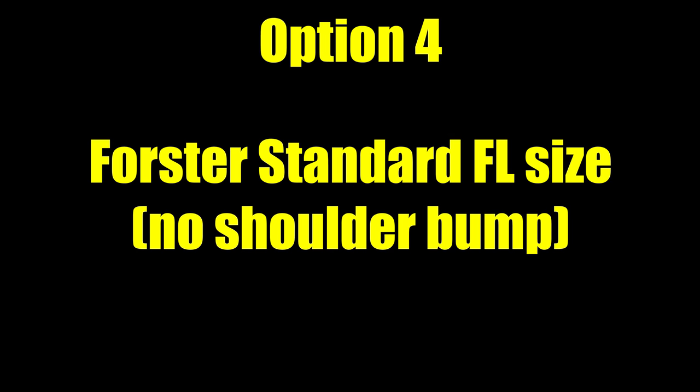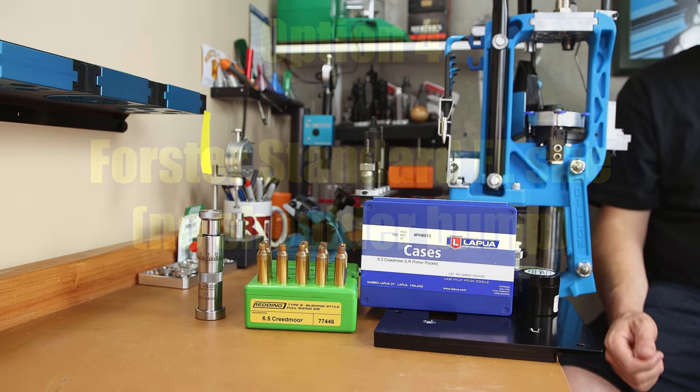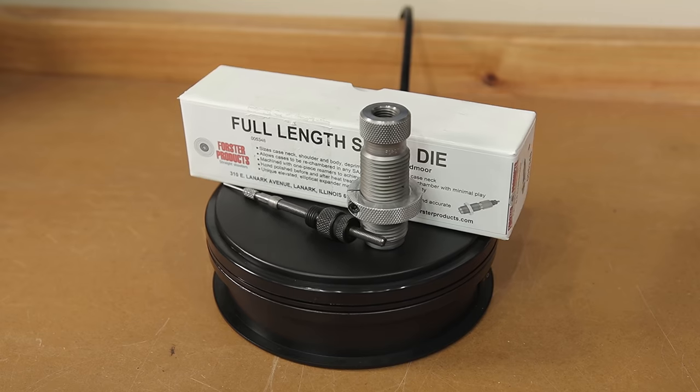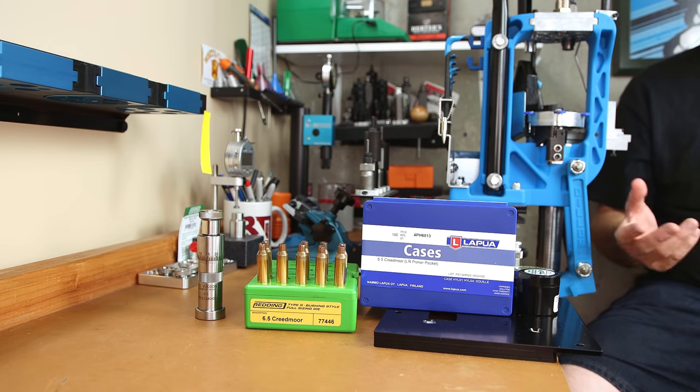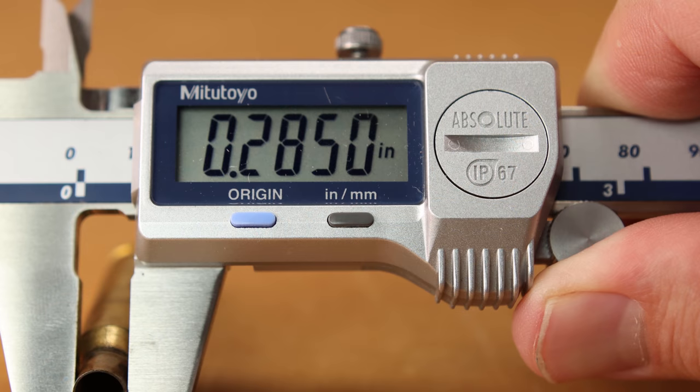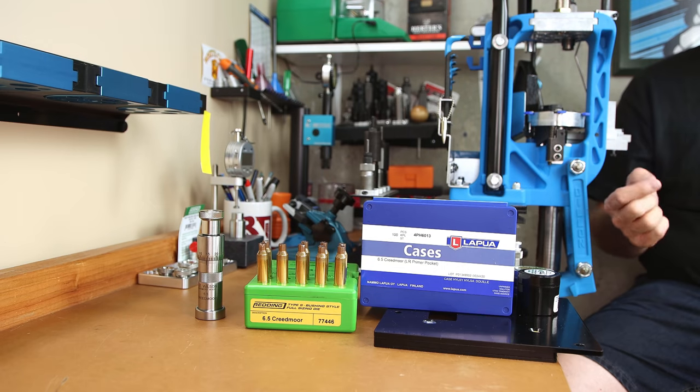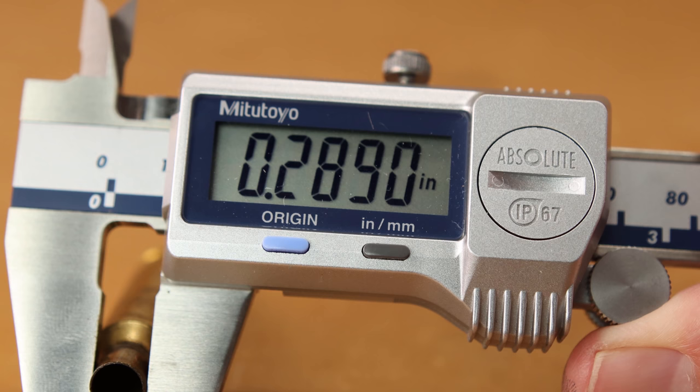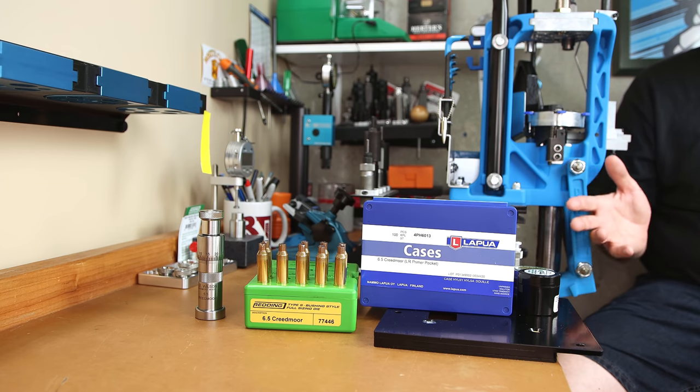Option 4: a full length sizer die. For this option, we'll be simply using my Forester full length sizing die as it is shipped from the factory, standard expander ball that comes with it, and everything. I've done some measurements on the brass as it comes out of the die, and without the expander ball you can see that the neck is sized down to about 285 thousandths. And when that 0262 inch diameter ball comes back through, it's going to neck it back out to somewhere in the ballpark of 289 or 290 thousandths, depending on the thickness of your brass.